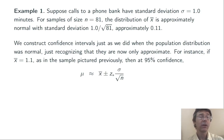Mu is about equal to x-bar plus or minus z-star sigma over the square root of n. Here, z-star is the critical z-value corresponding to the level of confidence, 95%.